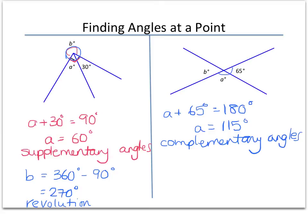And then if we take a look at B, we could do B two different ways. But I think the easiest way without doing any calculations is we can see that B and the 65 degrees are vertically opposite. So they're equal to each other. So B must be 65 degrees. And again, our reason is because we have vertically opposite angles.